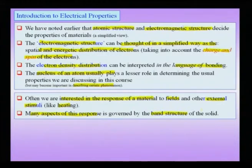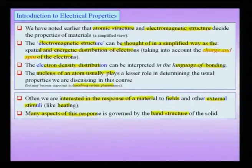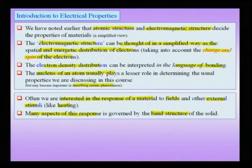Individual atoms have discrete energy levels, but when atoms come together, we have the concept of a band where electrons no longer belong to a single atom but to the entire solid as a whole. This band structure determines important properties which include the magnetic, optical, and electrical properties of the solid.